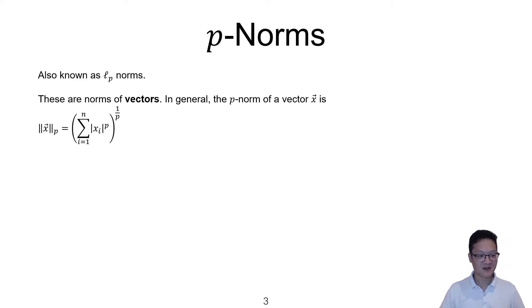So these are norms of vectors. Norm, another way of thinking about them is length. So in general, the p-norm of a vector x is defined to be this expression here.